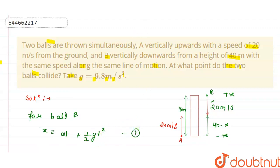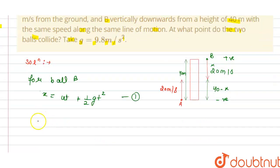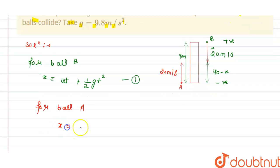For ball A, we have x = ut - ½gt². Minus and minus will become plus if we go from upward to downward direction. Here we have the equation of motion.